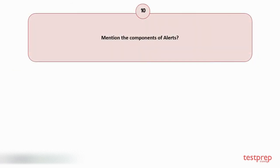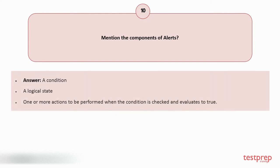Question number 10: Mention the components of alerts? The components are: 1. A condition. 2. A logical state. 3. One or more actions to be performed when the condition is checked and evaluates to true.